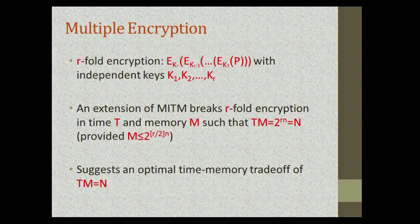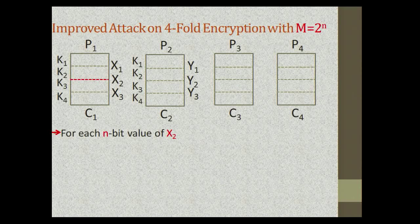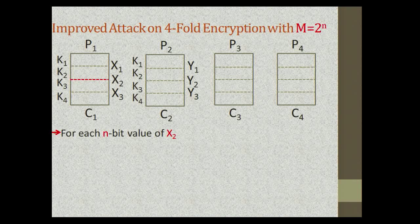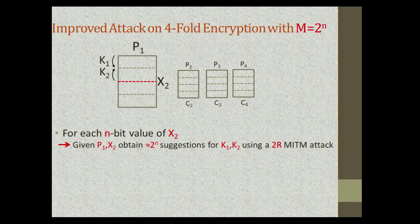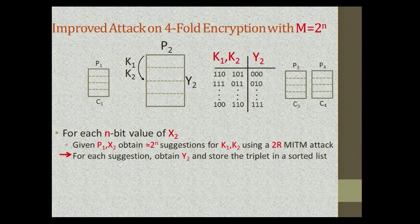It turns out that is not the case, because interesting things start happening already with r=4. With r=4 we have an improved attack requiring memory of 2^n. The first major step is to guess the intermediate value x2, defined by the encryption of p1 using k1 and k2. We have an outer loop iterating over all these values. Given p1 and x2, we obtain 2^n suggestions for k1 and k2 using the standard two-round meet-in-the-middle attack. For each such suggestion, we partially encrypt p2 and obtain a suggestion for y2, which we sort and store in a list sorted according to y2.